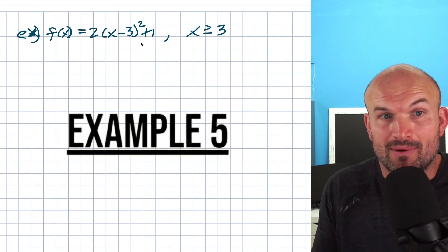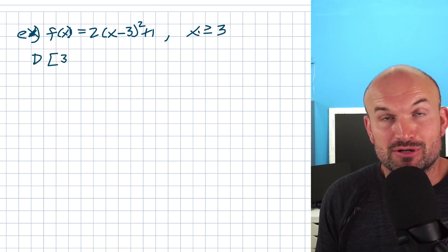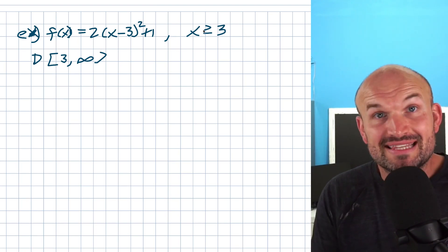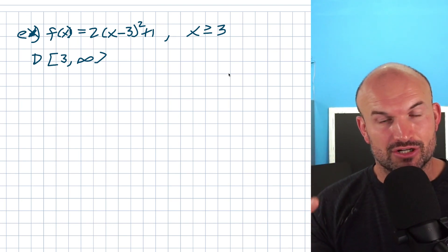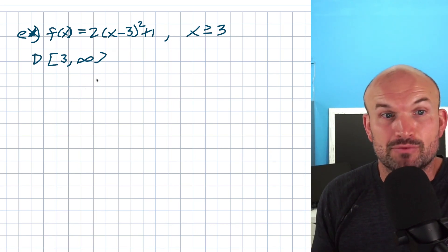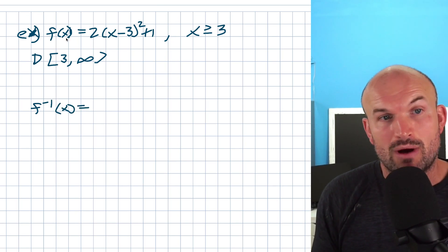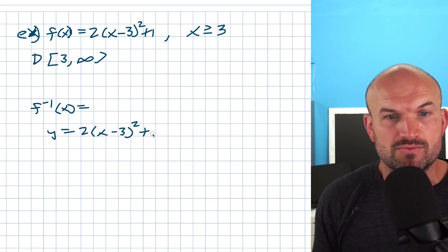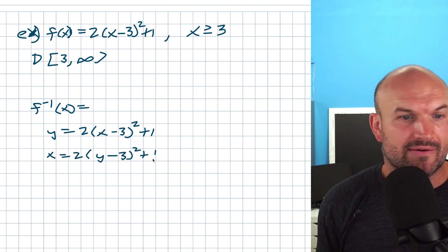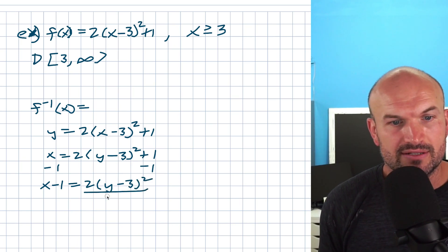This next example already has a domain restriction. The domain is all numbers greater than or equal to 3, so from 3 to infinity. To find the range, we find the domain of the inverse. We start by replacing f(x) with y: y = 2(x − 3)² + 1. We don't need to worry about the restriction yet. Swap x and y: x = 2(y − 3)² + 1. Now solve for y — subtract 1 from both sides: x − 1 = 2(y − 3)². Divide by 2: (x − 1)/2 = (y − 3)².